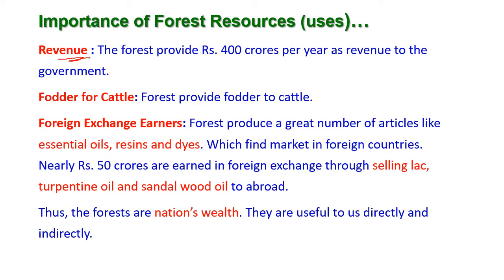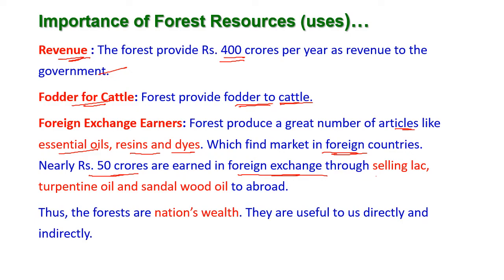Revenue: forests provide around 400 crores per year as revenue to the government. Fodder for cattle: forests provide enough amount of fodder to cattle. Foreign exchange: forests provide a great number of articles like essential oils, resins, and dyes which find a market in foreign countries. Nearly 50 crores of money is earned through foreign exchange by selling lac, turpentine oil, and sandalwood oil to foreign countries. Thus forests are our nation's wealth, useful to us directly and indirectly.